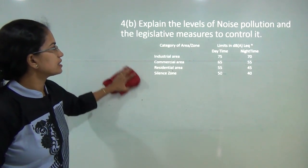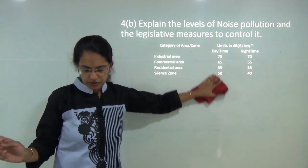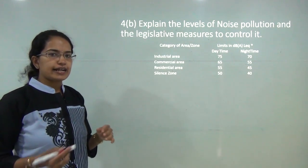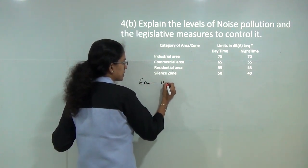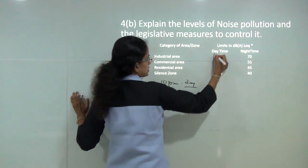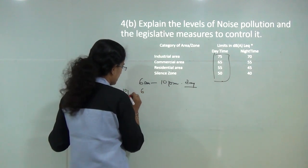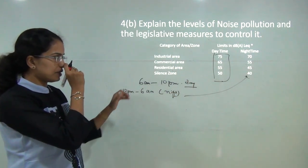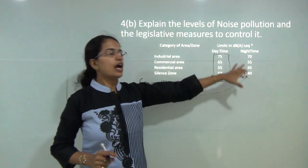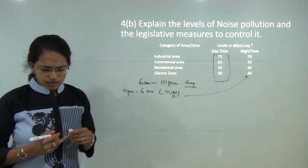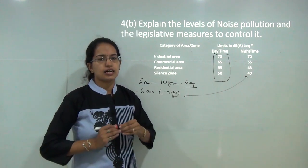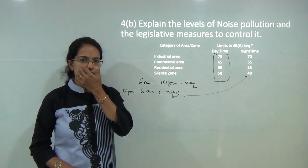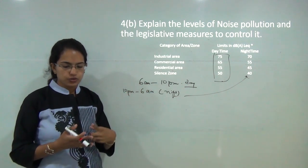The next question is to explain the levels of noise pollution and legislative measures to control it. Noise pollution is a significant problem. The government has set a daytime limit (6 am to 10 pm) and a nighttime limit (10 pm to 6 am), with decibel values for industrial, commercial, residential, and silent zones. Various acts address this: Article 21 (preservation of natural heritage) and Article 25 (universal declaration of human rights), as well as Section 2 of the Air Pollution Act introduced in 1984.